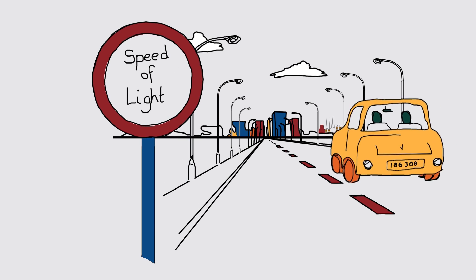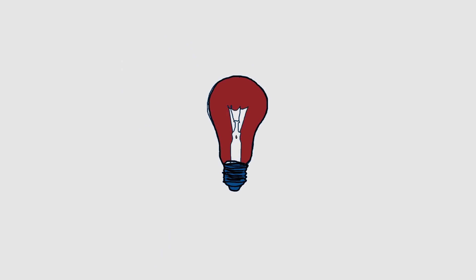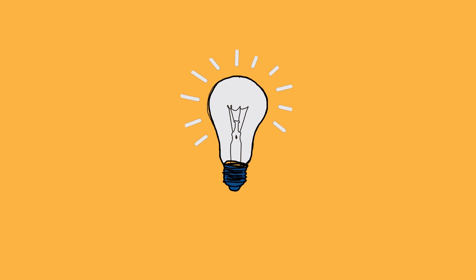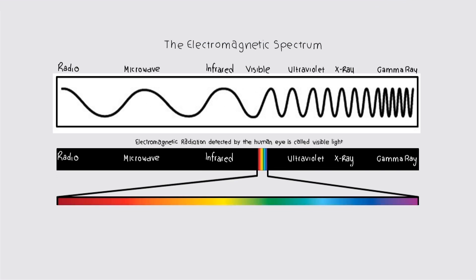Maxwell didn't think this was a coincidence and declared light to be electromagnetic radiation. Furthermore, Maxwell predicted that there would be other frequencies of radiation waiting to be discovered. This is what we call the electromagnetic spectrum.